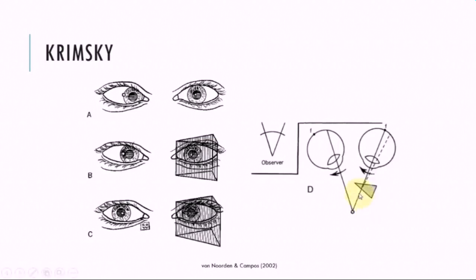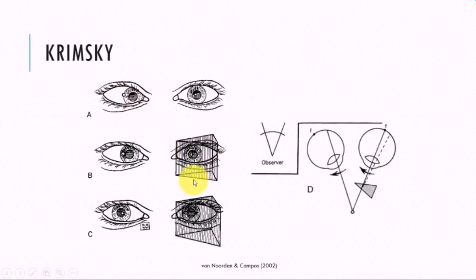When we put a base-out prism, the light will bend towards the base. Here we can see that the prism allows the light to deviate towards the base. Because this is the fixing eye, the eye will rotate in so that the fovea can fix back onto the target. In that left eye turning in to take up fixation, we know the eyes need to move together — so the right eye will make a conjugate movement out. The eye that was in will move out, and progressively, as you increase these prisms, the deviating eye will move out until you're satisfied that the corneal reflection is in the correct position.